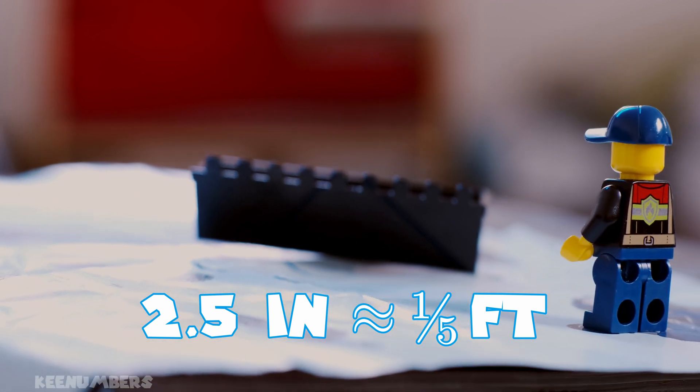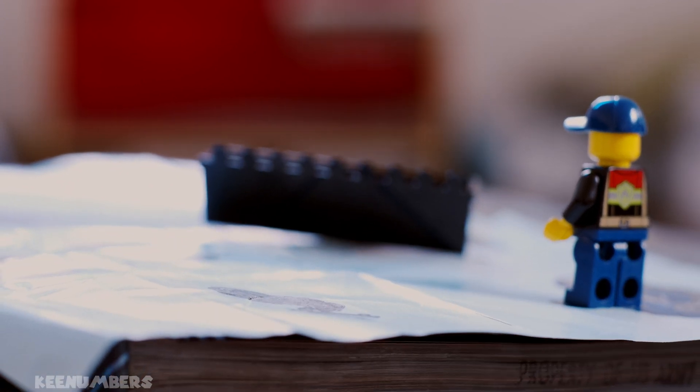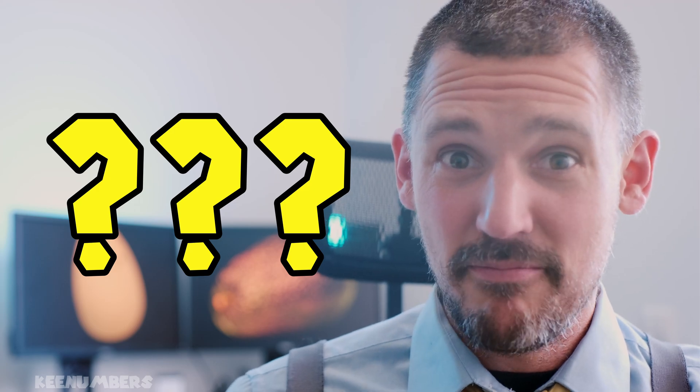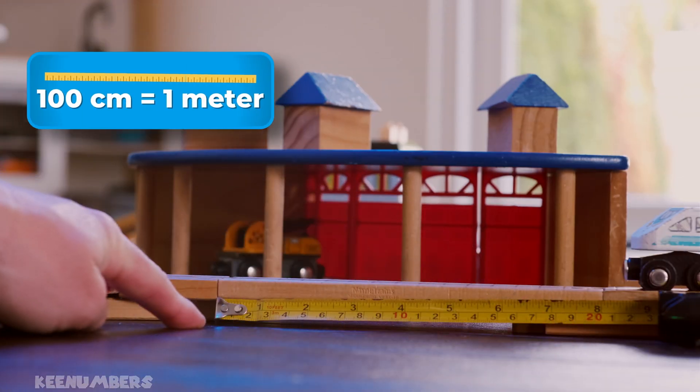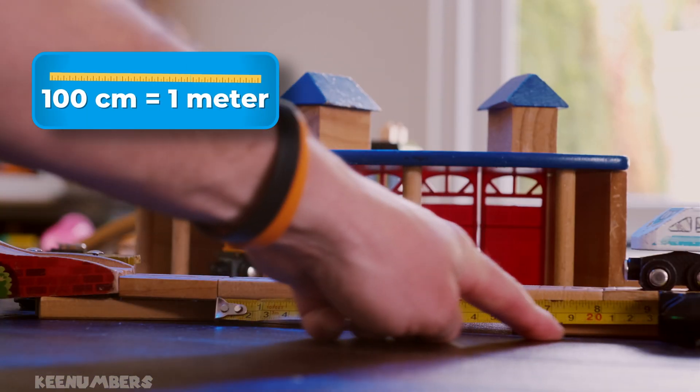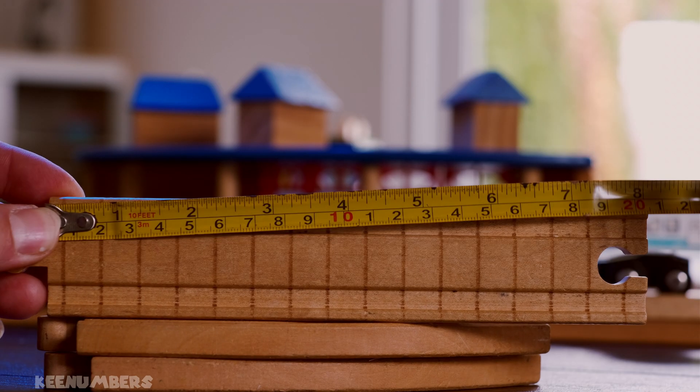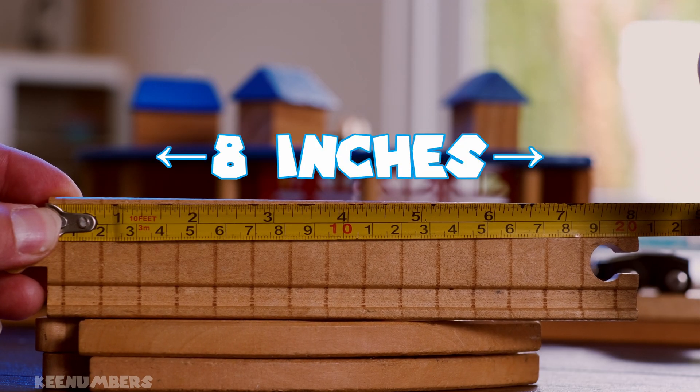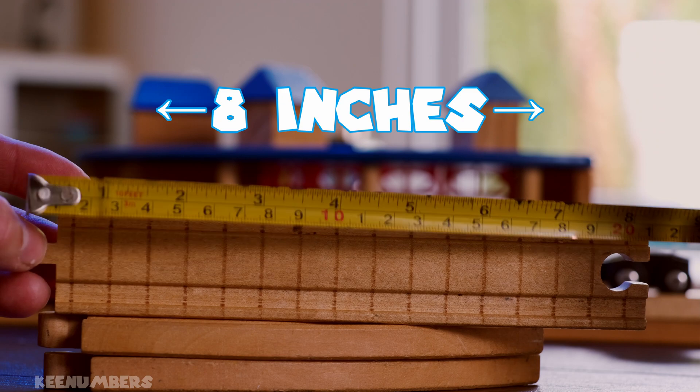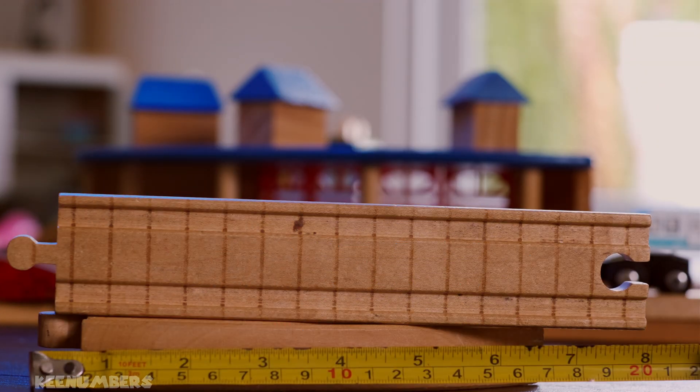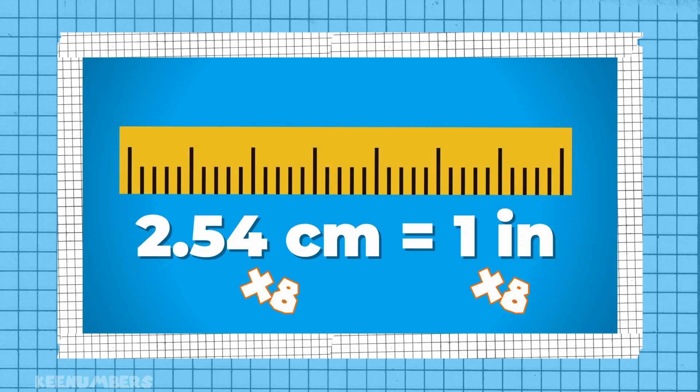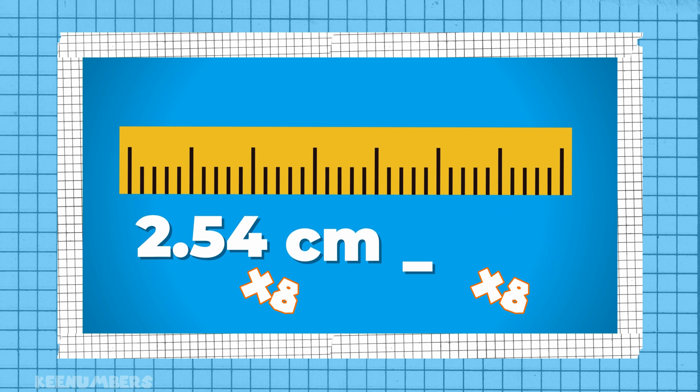There are 100 centimeters in one meter, and in this example we have eight inches of train tracks, or 20.3 centimeters, because there are 2.54 centimeters in every inch. That's how we get eight inches is equal to 20.3 centimeters.